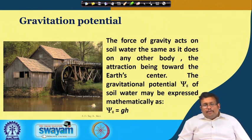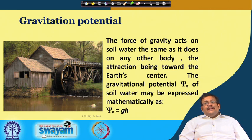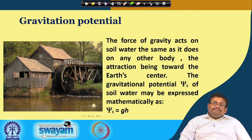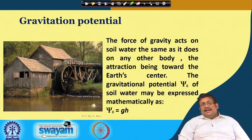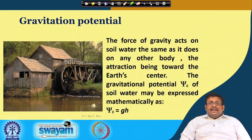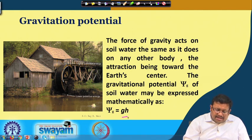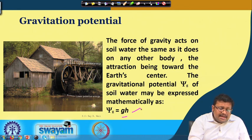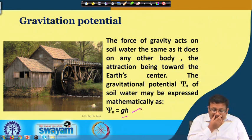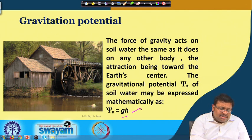Let us start with gravitational potential. When the force of gravity acts on soil water, it acts the same as it does on any other body, with attraction being towards the earth's centre. The gravitational potential psi_g of soil water may be expressed mathematically as psi_g = g × h, where g is the gravitational acceleration and h is the height. You can see this water wheel illustration — water will always try to move from the higher position to the lower position due to gravitational attraction.